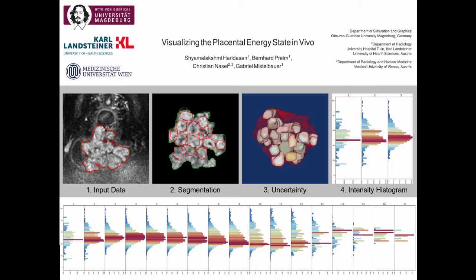Cotyledons are assumed to have high signal intensity in diffusion tensor MRI, possibly due to their rather high perfusion in a healthy condition. We partition the cotyledons into spherical shells and draw the intensity histograms side by side with increasing distance from the cotyledon centroid. This reveals the energy state of a single cotyledon.